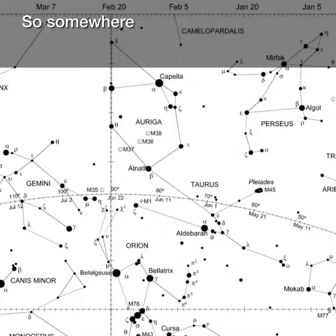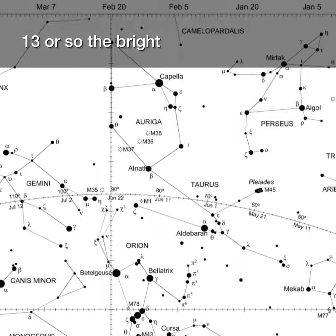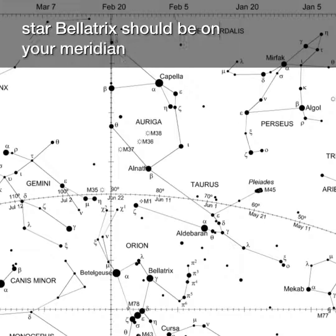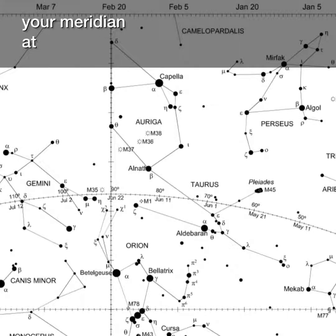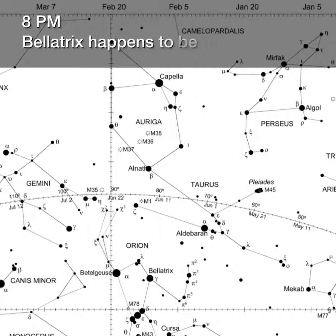So somewhere around February 13th or so the bright star Bellatrix should be on your meridian at 8 pm. Bellatrix happens to be the name of my cat.